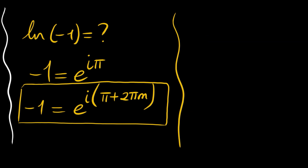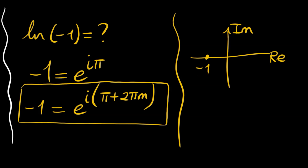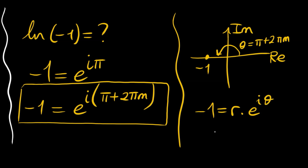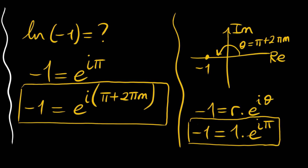Negative 1 as a complex number: we draw the real and imaginary axes. Negative 1 stands here on the real axis. The angle is θ equals π, but we can also express this as π + 2πm. The length r is equal to 1. So negative 1 equals r times e to the power of i·θ, which is 1 times e to the power of i·π.